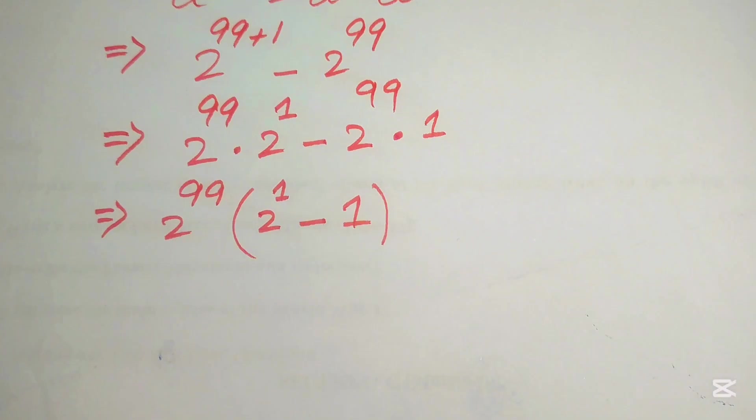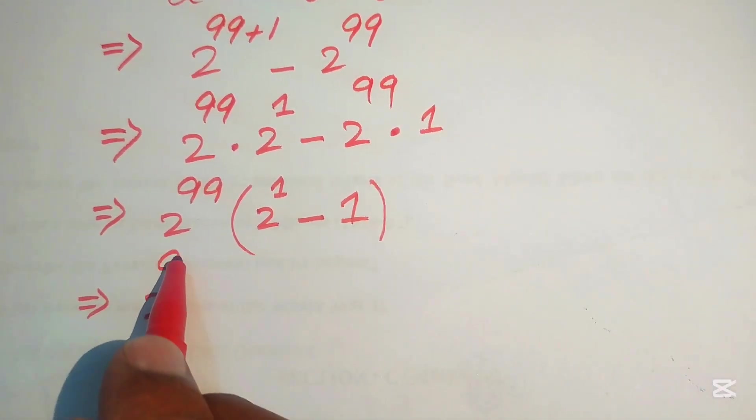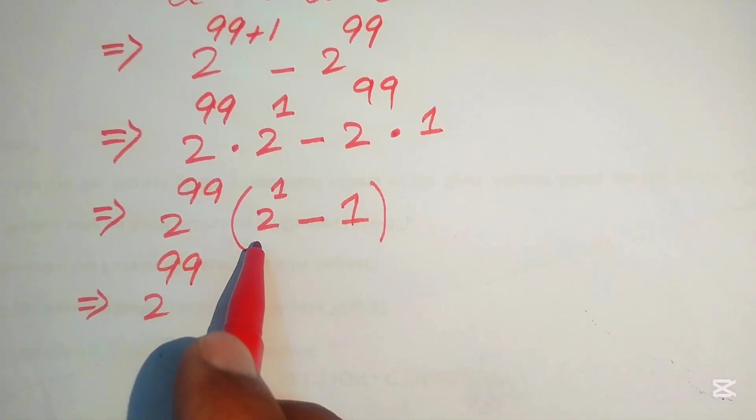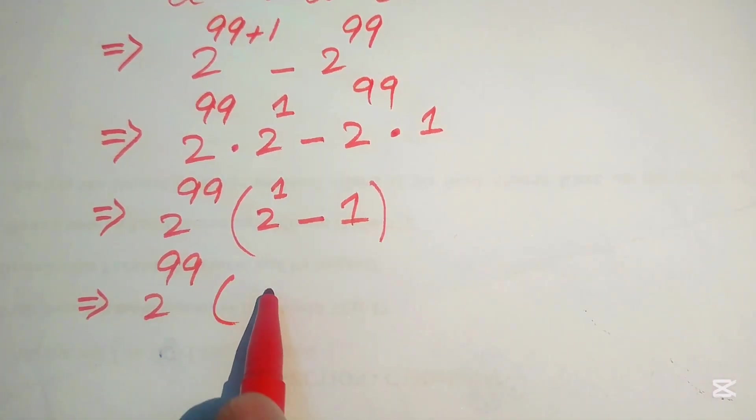So after that, we write it as 2 to the power of 99 into, this is 2 to the power of 1 becomes 2, and 2 minus 1 equals 1 only.